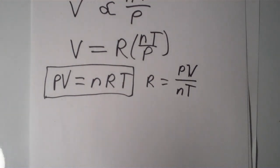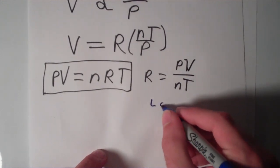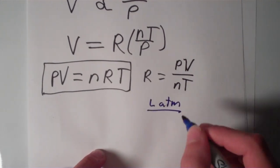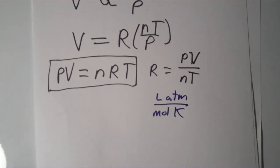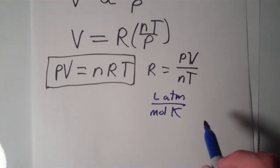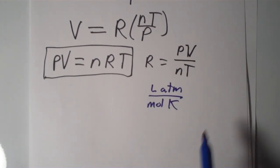So the most common units of the ideal gas constant are liters times atmospheres over moles times Kelvin. So notice we have a unit of pressure, atm, we have a unit of volume, liters, we have a unit of the amount, that's moles, and then we have the absolute temperature, which is in kelvins.